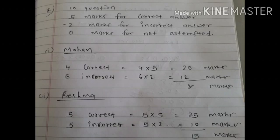For a correct answer you get 5 marks, for a wrong answer minus 2 marks, and for an unattempted question 0 marks. Mohan gets 4 correct and 6 incorrect answers. What is his score? His score will be 15 marks.